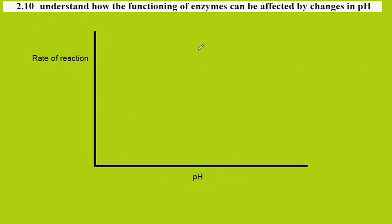For any enzyme, we find that at a particular pH we get the maximum rate of reaction, illustrated here with this point. That gives us our maximum rate.